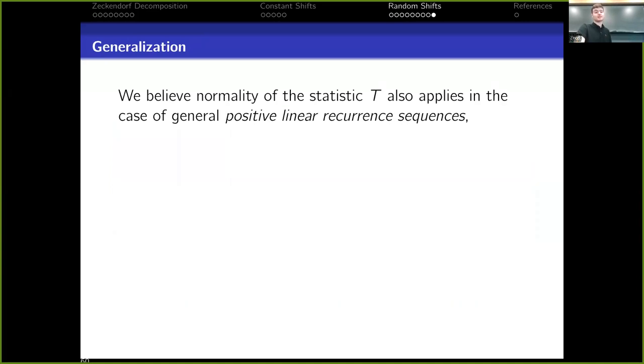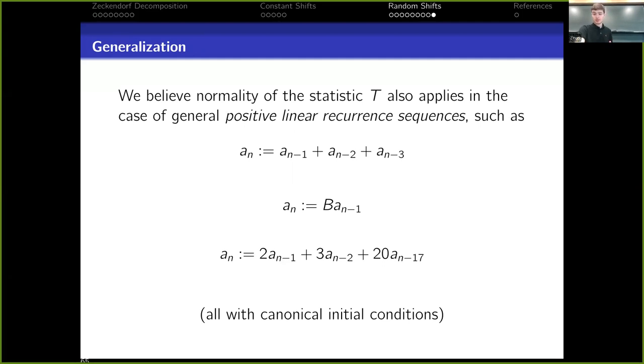And as a final generalization, we believe that the statistic τ, which is sort of looking at counts of indices at the Jth index of X, the Jth index of Y, and then subtracting what happens at the string for X plus Y, we believe this normality result will apply in general to positive linear recurrence sequences, such as the Tribonacci numbers with proper initial conditions, base B decompositions, as we saw with binary, even base 10, as well as pretty much any recurrence sequence with non-negative integer coefficients. One simply has to make sure that aₙ₋₁ has a positive integer coefficient. It can't be zero. There can be zeros in between, as we see here, and then it just ends, for example, with 20aₙ₋₁₇. Again, there are some canonical initial conditions that have been outlined in the research, but we believe normality will hold again by considering probabilistically large gap sizes, as we saw with runs of zeros.